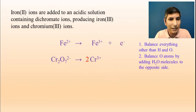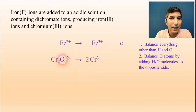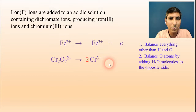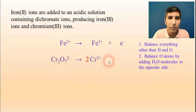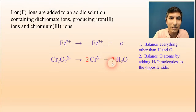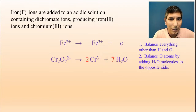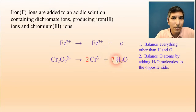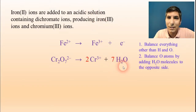In the second step, I balance the oxygen atoms. I have seven oxygen atoms on the left side but none on the other side. So I balance this out by adding seven water molecules to the right side. Now I have the same number of oxygen atoms on both sides of the arrow. The reason I can do this is that we are in a solution, so water is present and must be participating in this process.